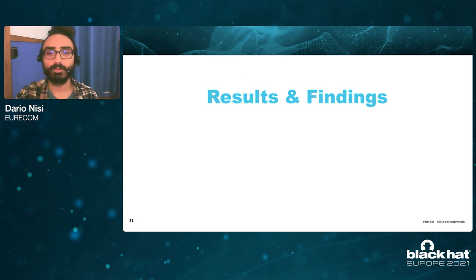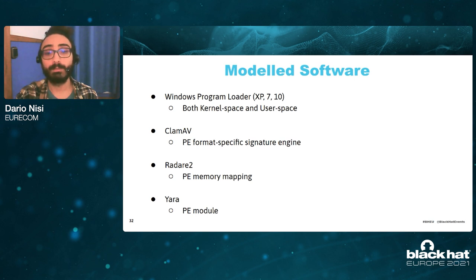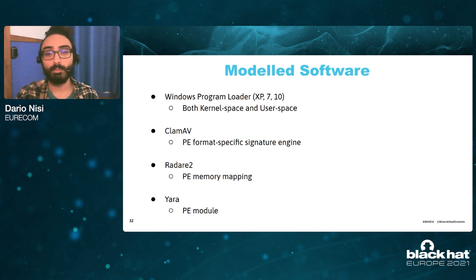Let's have a look at some results and findings of our work. We modeled and compared the following software artifacts: the Windows program loader for versions XP, 7, and 10, both the kernel space and the user space components; ClamAV, specifically its PE parsing format-specific signature engine; Radare2, specifically how it handles the memory mapping operations; and YARA, in particular its PE module.